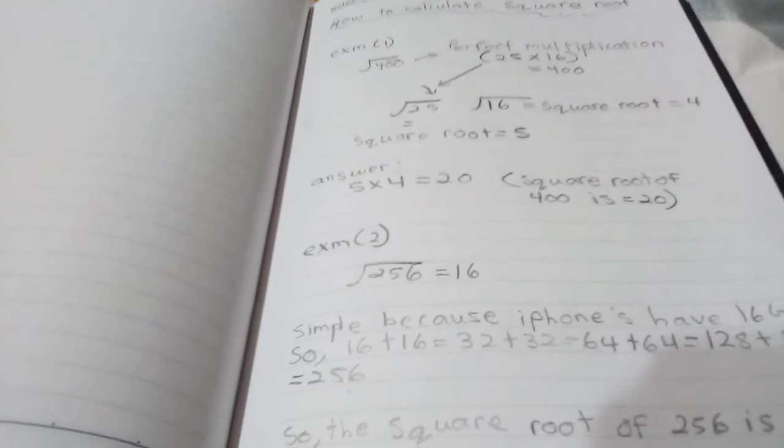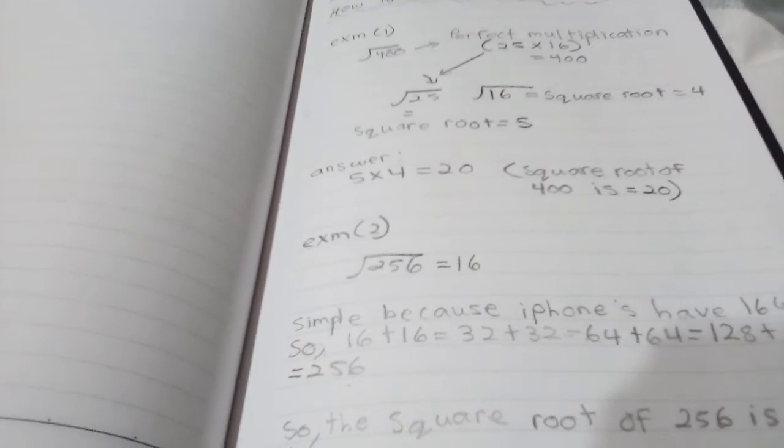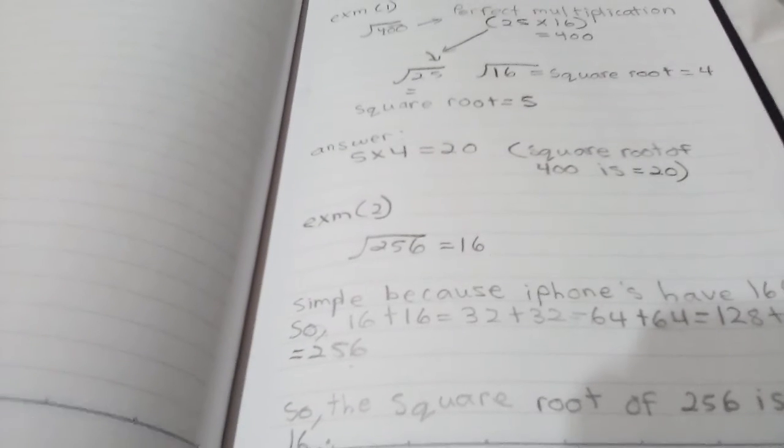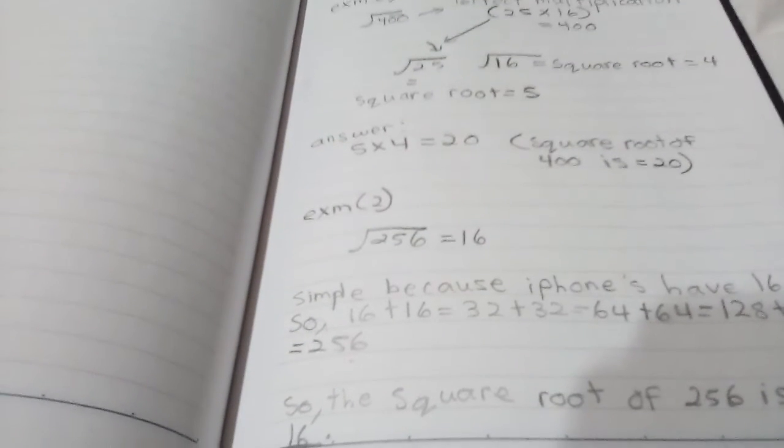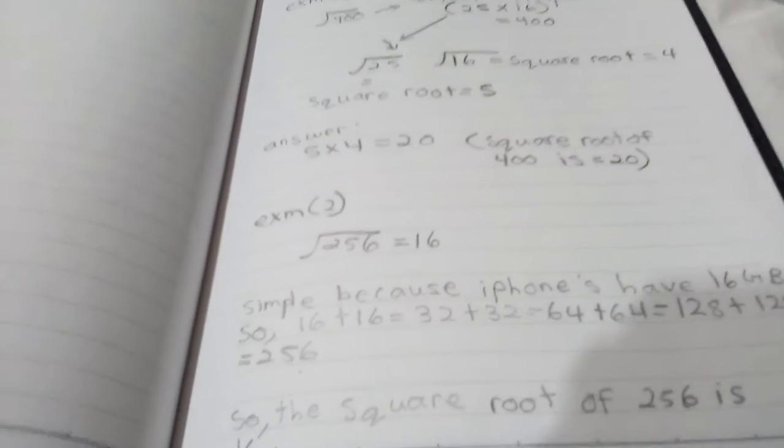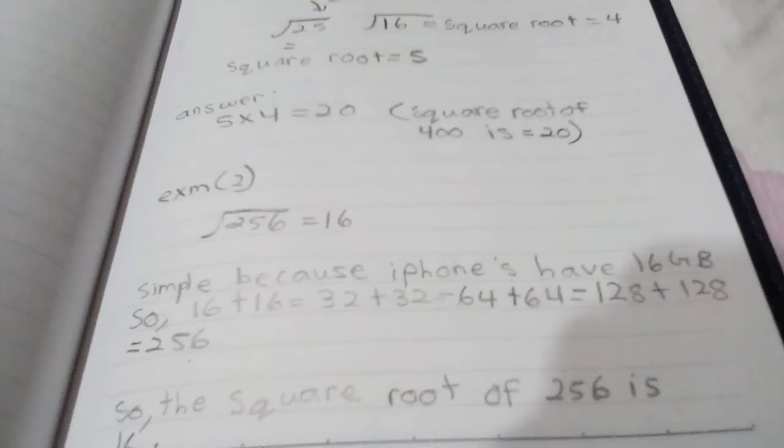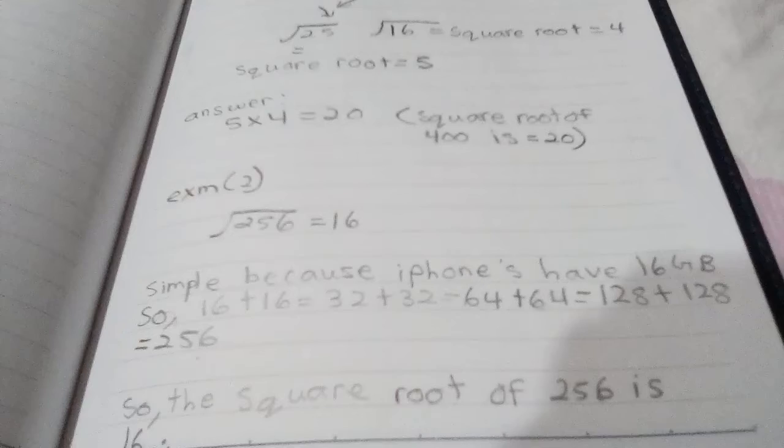Example 2 is you have to find the square root of 256. It's a simple method that I created because the square root of 256 equals 16. It's simple because the iPhones have 16 gigabyte. So you can follow that method.